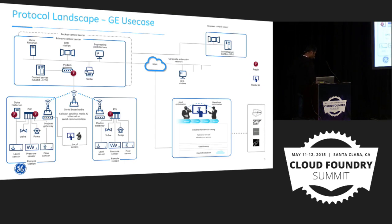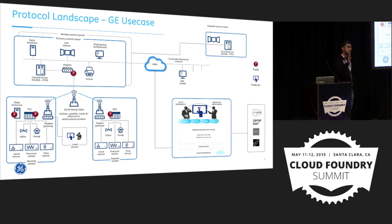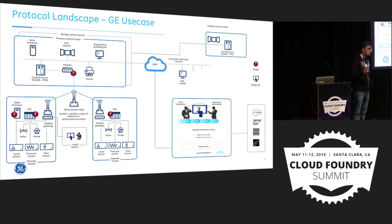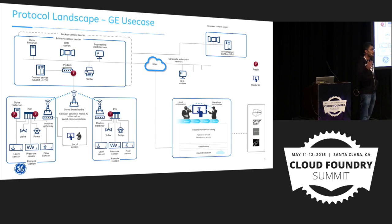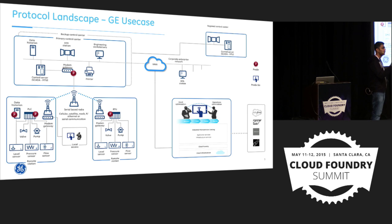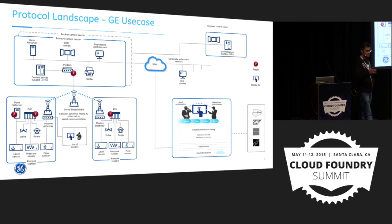Most of you would know that GE is a big industrial company. It has its presence in many industries — aviation, transportation, healthcare, oil and gas, power generation, and many more.